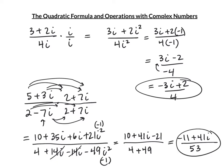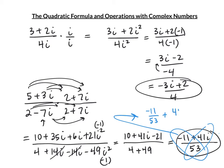In a + bi form, this is -11/53 + 41i/53. If the problem asks for a + bi form, write it that way — both expressions are equivalent.